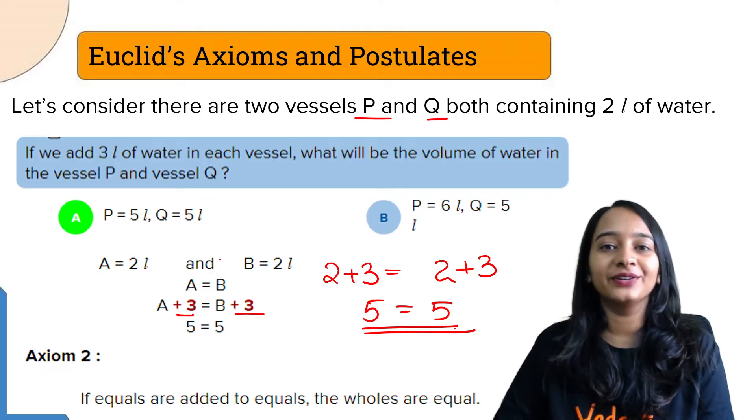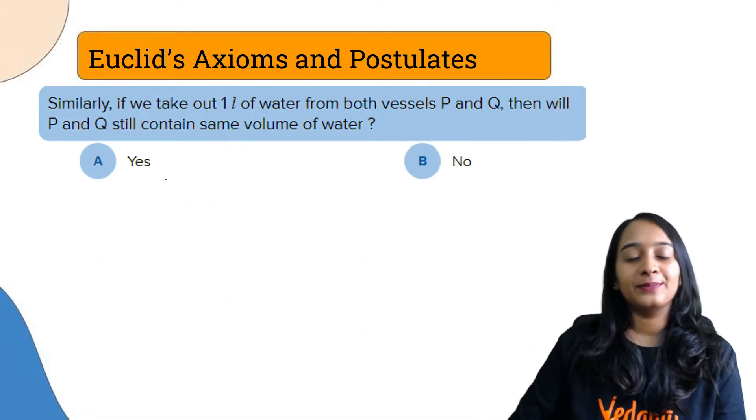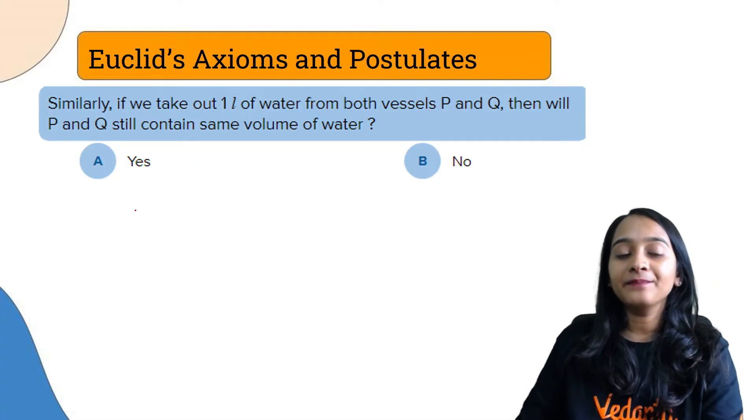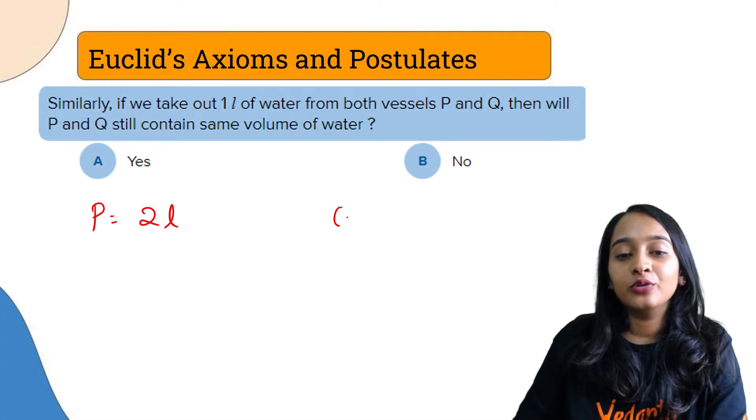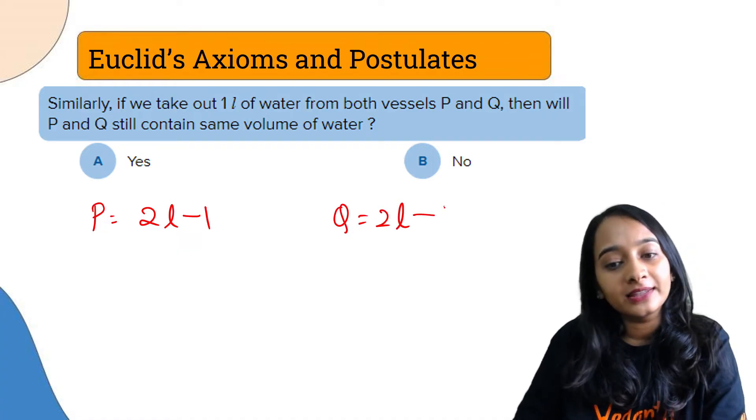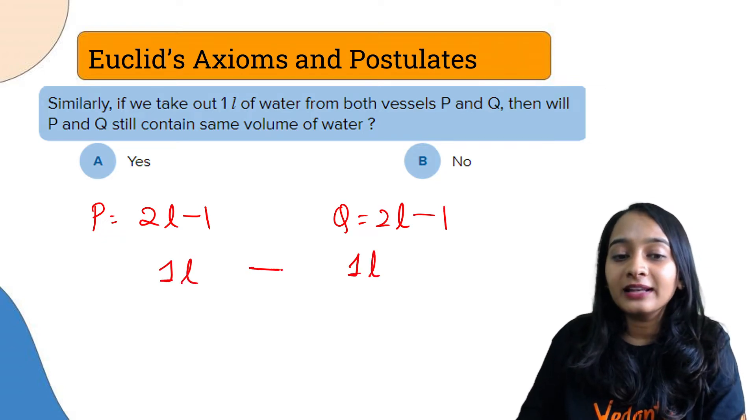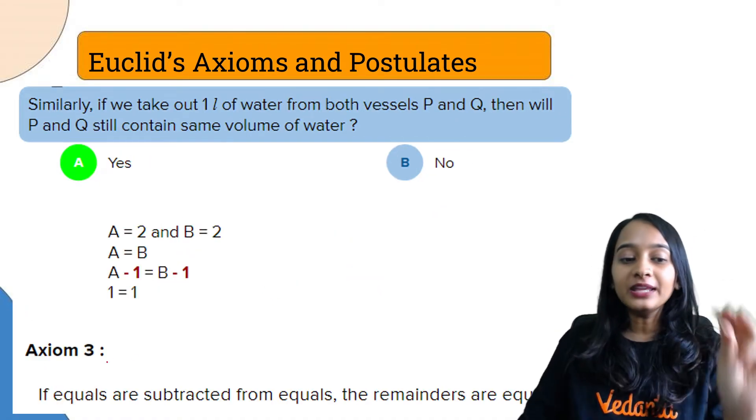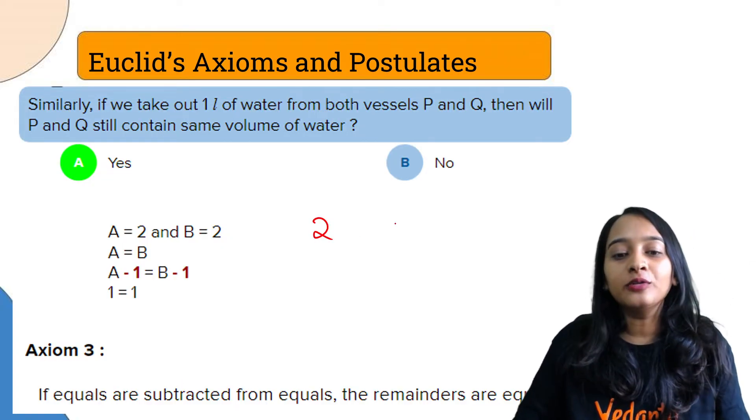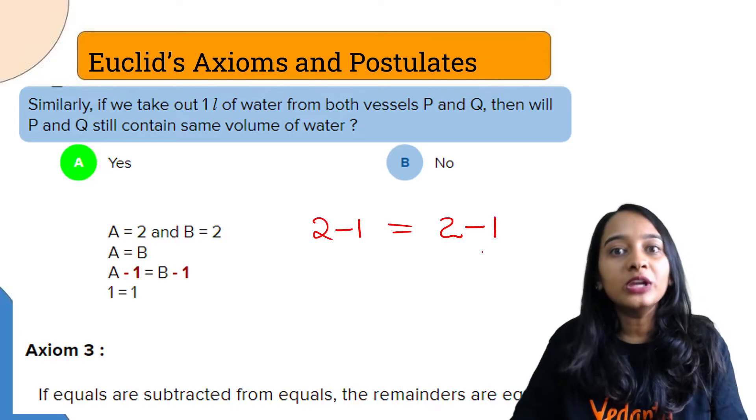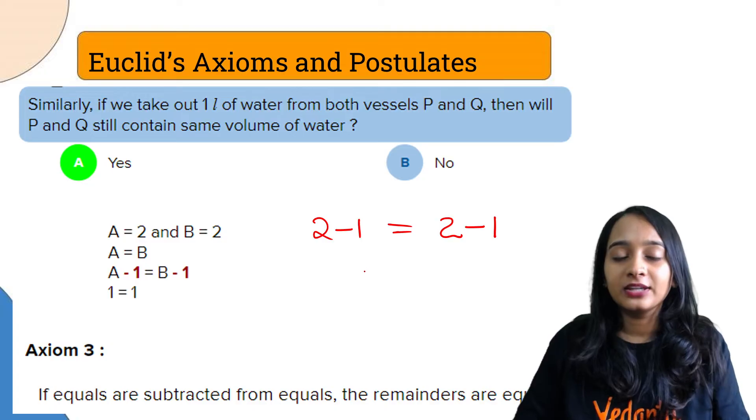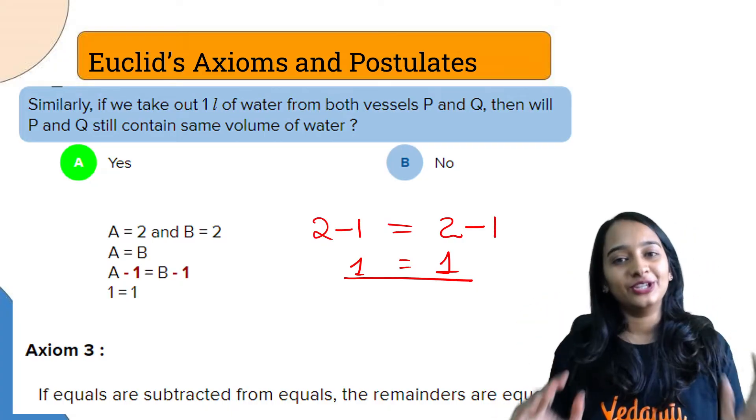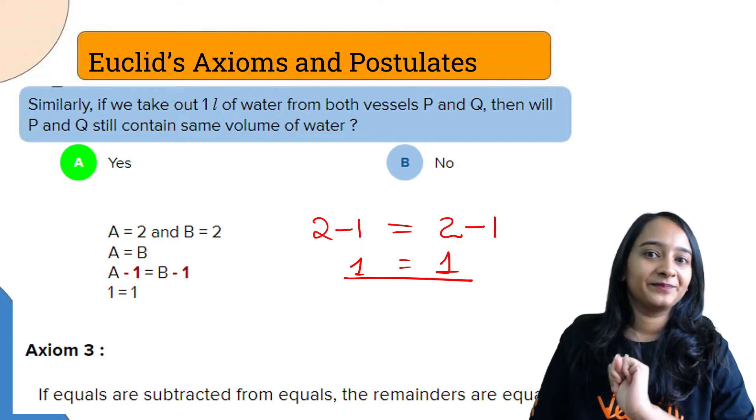Similarly, if we take out 1 liter of water from both vessels P and Q, will the water quantity remain the same? P has 2 liters and Q has 2 liters. If we take out 1 liter from both, each will have 1 liter remaining. So Axiom number 3 states: if equals are separated from equals, the remainders are also equal to each other.